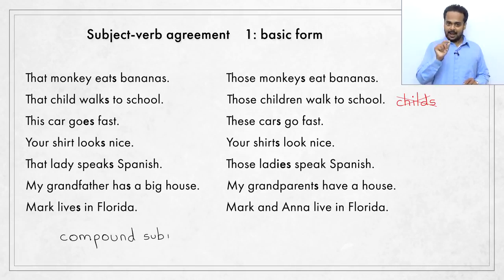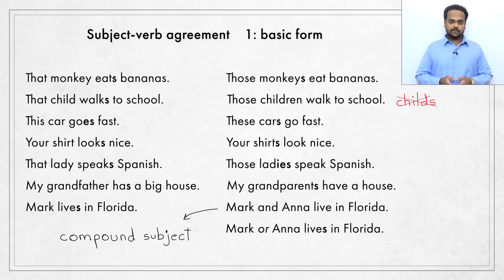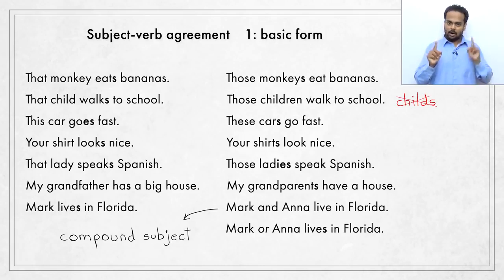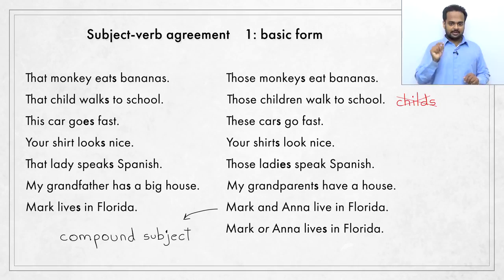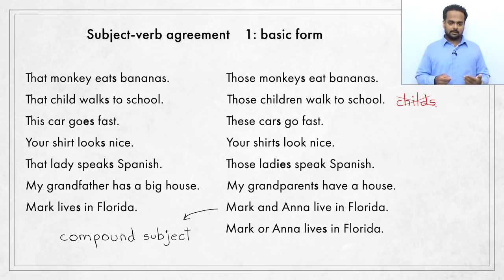This type of subject connected by AND is called a compound subject. There is another type of compound subject connected by OR: 'Mark or Anna lives in Florida.' Notice we have a singular verb — lives — because the conjunction OR means that either Mark or Anna, one of those two, is in Florida, not both. So only one person lives in Florida, the subject is considered singular, and the verb is also in singular form. This type of compound subject connected by OR is not that common, but it's still useful to keep this rule in mind.